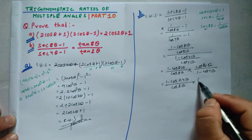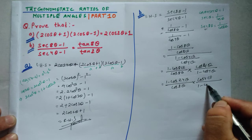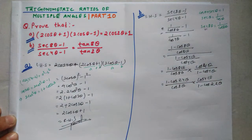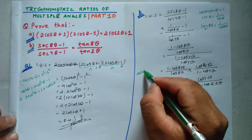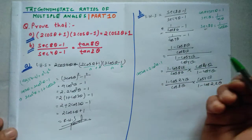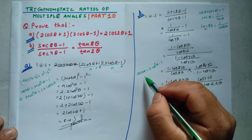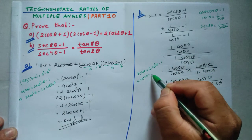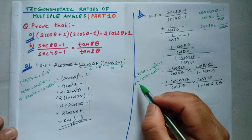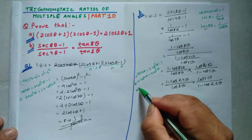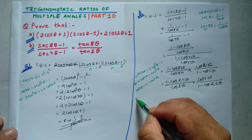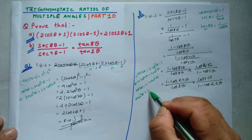Writing 1 - cos8θ = 2sin²4θ and 1 - cos4θ = 2sin²2θ, using the identities: 1 + cos2a = 2cos²a and 1 - cos2a = 2sin²a.